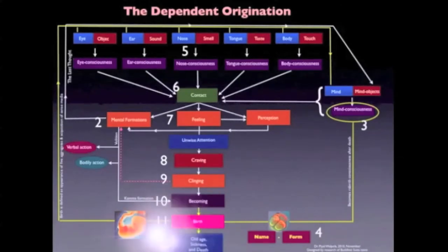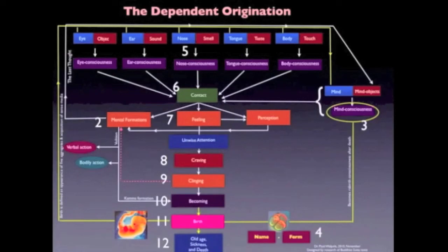And lastly, we have sickness, old age, and death. This completes the chain of causation in dependent co-arising.